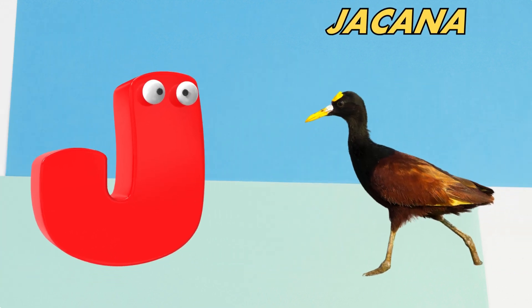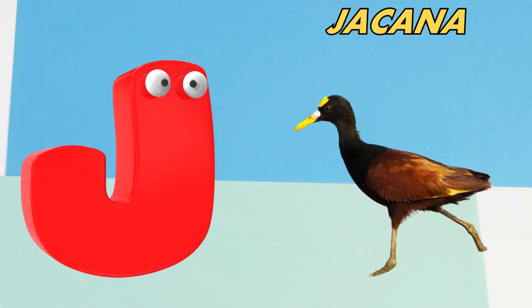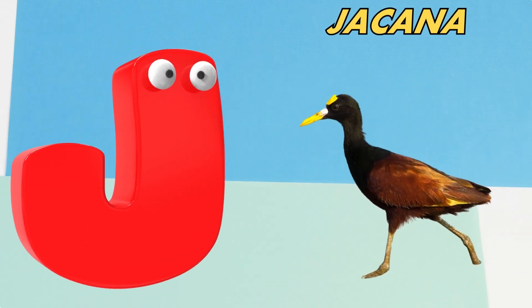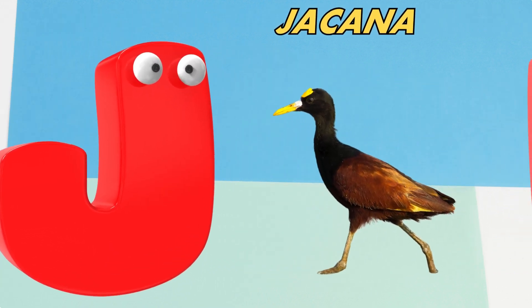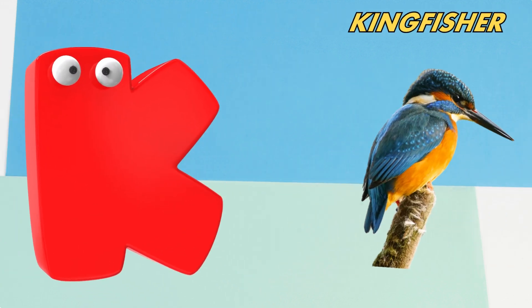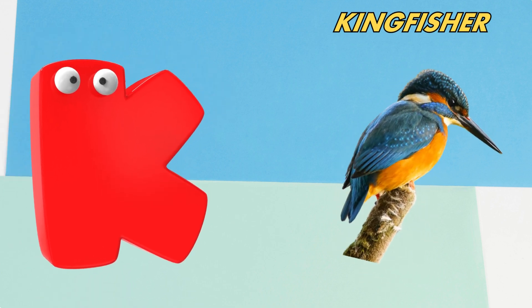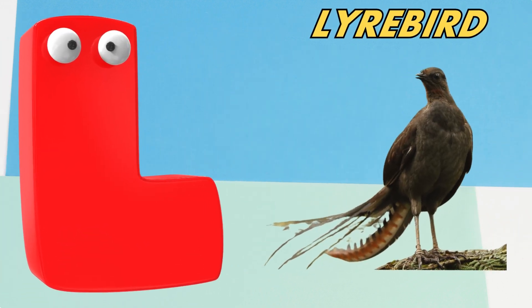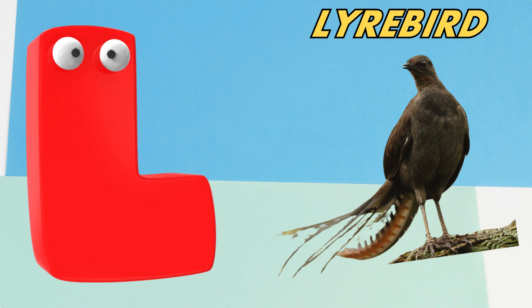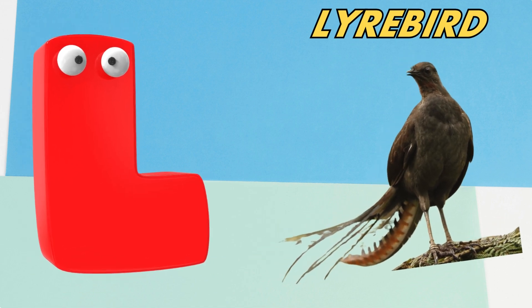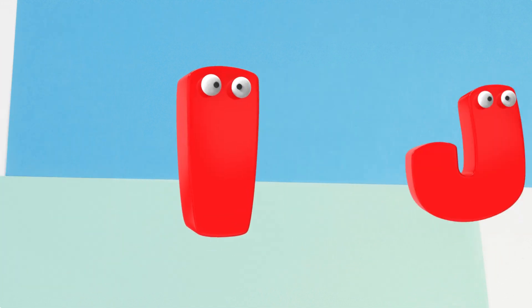J is for jacana. J, j, jacana. K is for kingfisher. K, k, kingfisher. L is for lyrebird. L, l, lyrebird.